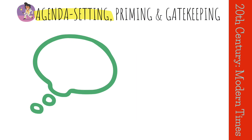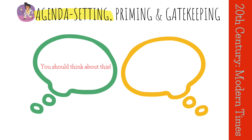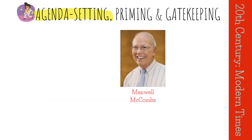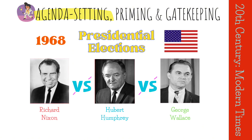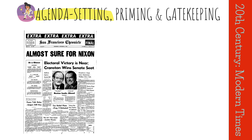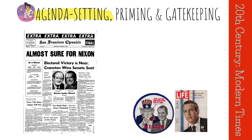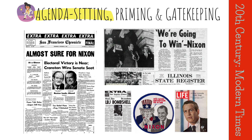Agenda setting theory is the idea that the media don't tell us what to think, but they do influence what we think about. This theory was first proposed by Maxwell McCombs and Donald Shaw in their study of the 1968 presidential elections in the United States. They found that the more attention the media gave to a particular issue, the more important that issue was considered by the public.